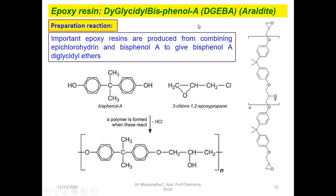We call it the diglycidyl group because of the presence of glycol group — CHOH and CH₂O — because of two oxygens attached to two neighboring carbons. Diglycidyl bisphenol A is also called epoxy resin. The polymer chain ends will have unreacted epoxy groups. The presence of OH groups helps this polymer behave as a glue; it has adhesive properties due to the presence of epoxy groups, OH groups, and difunctional groups.